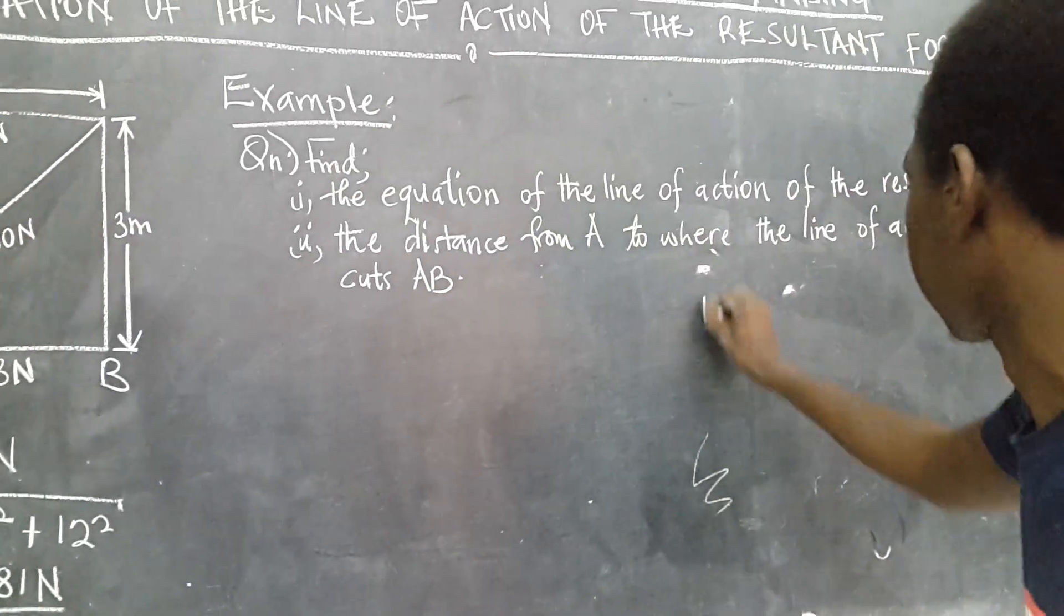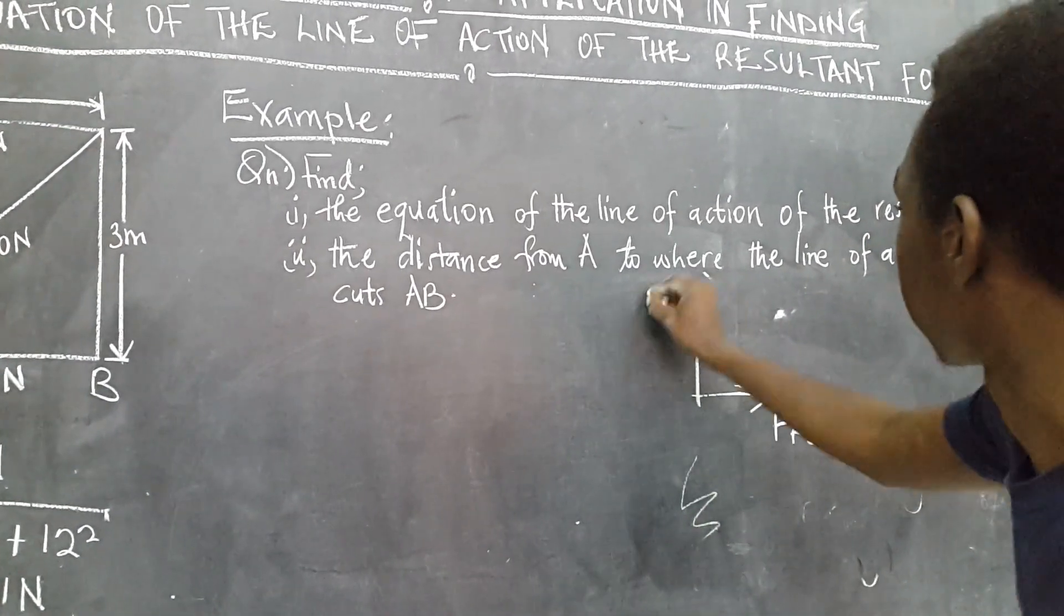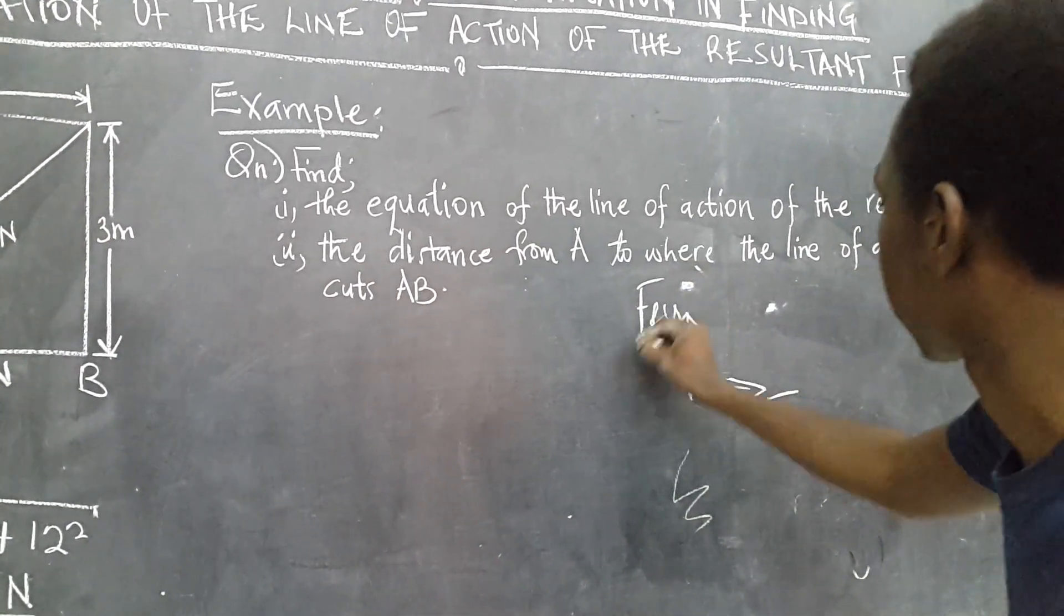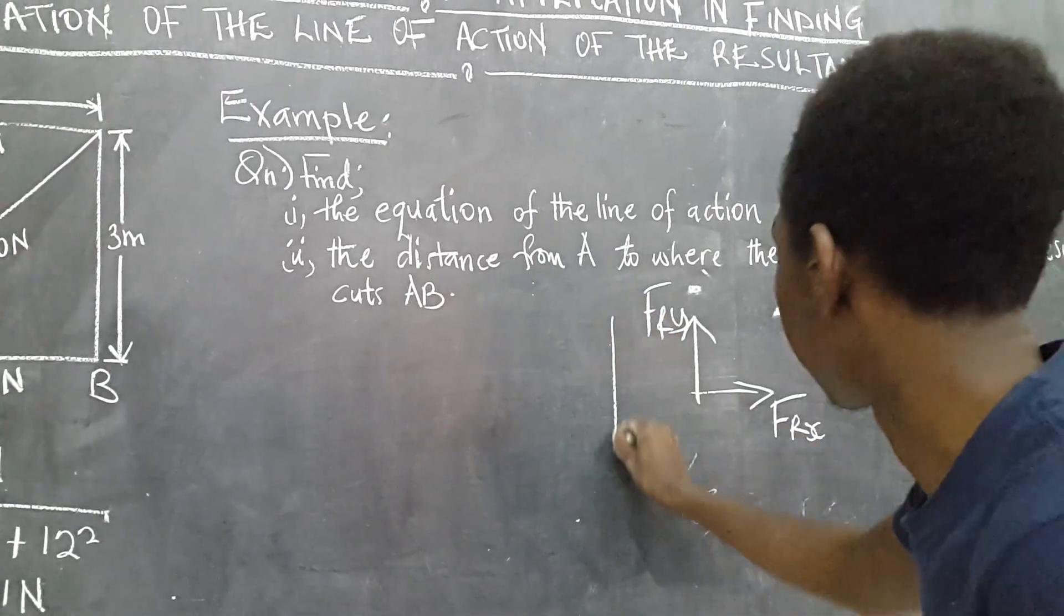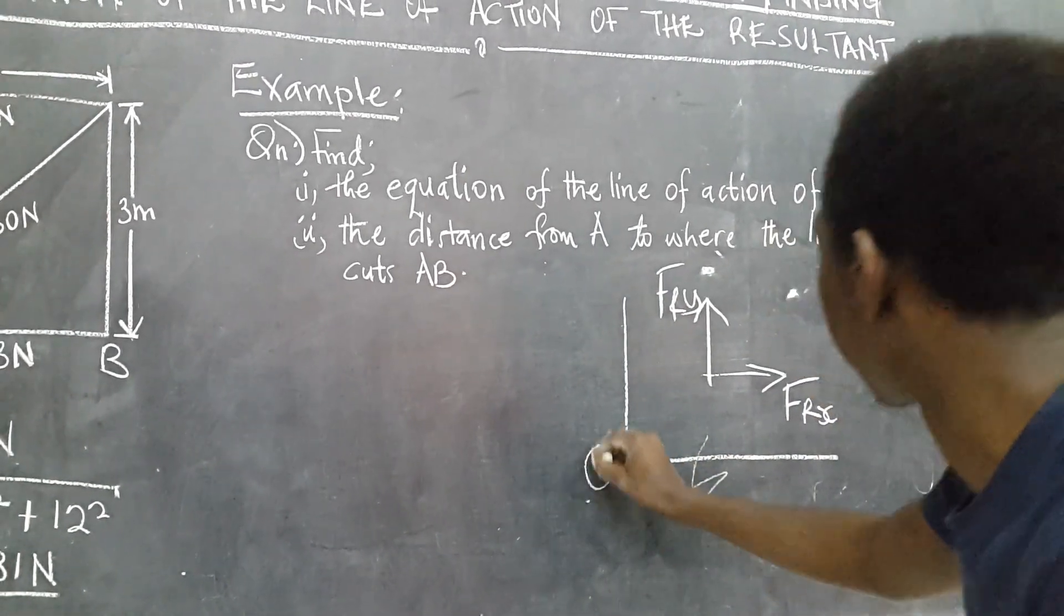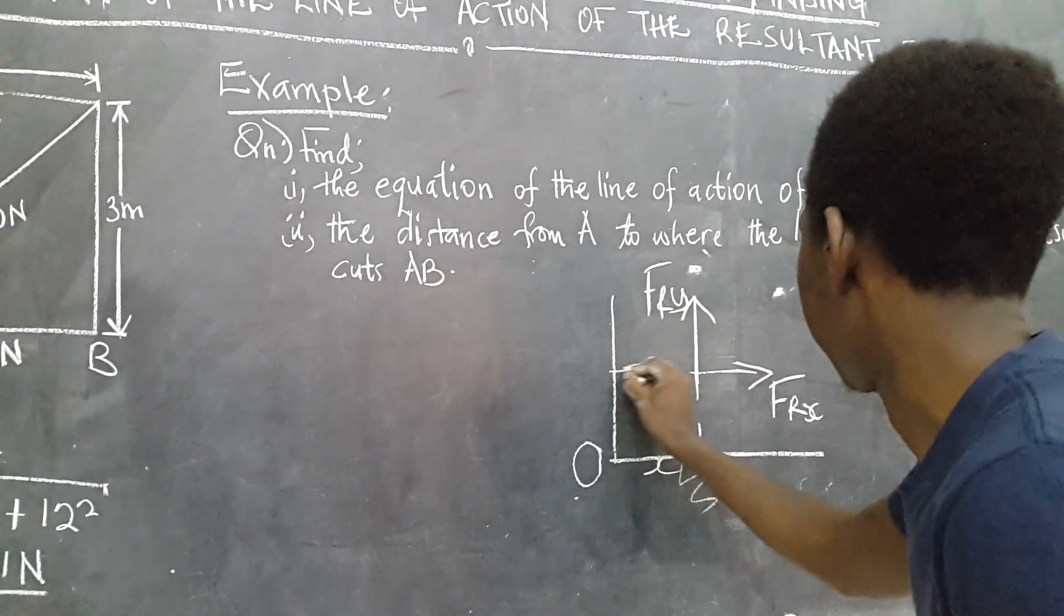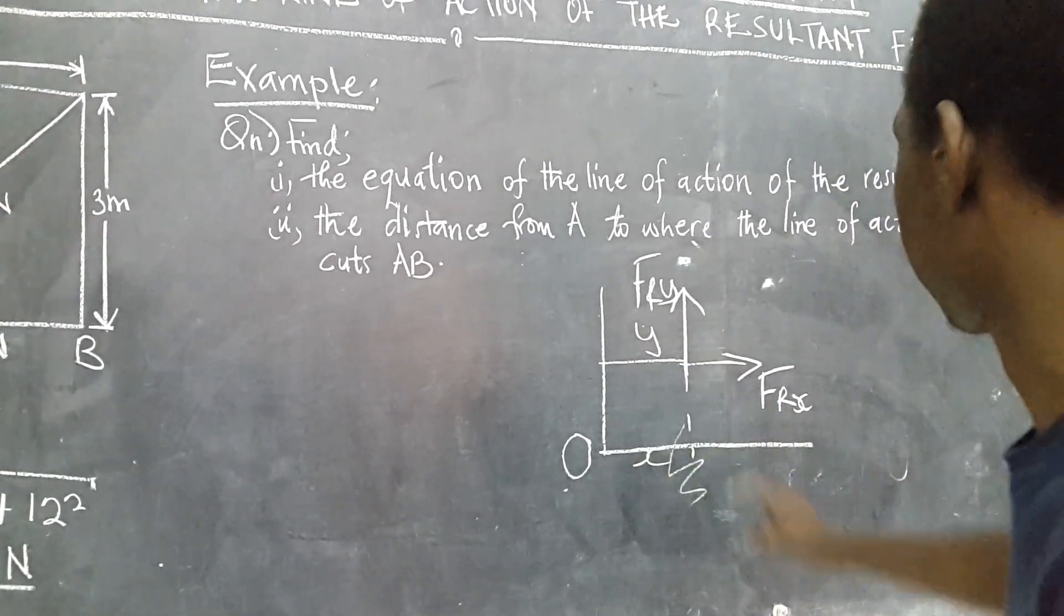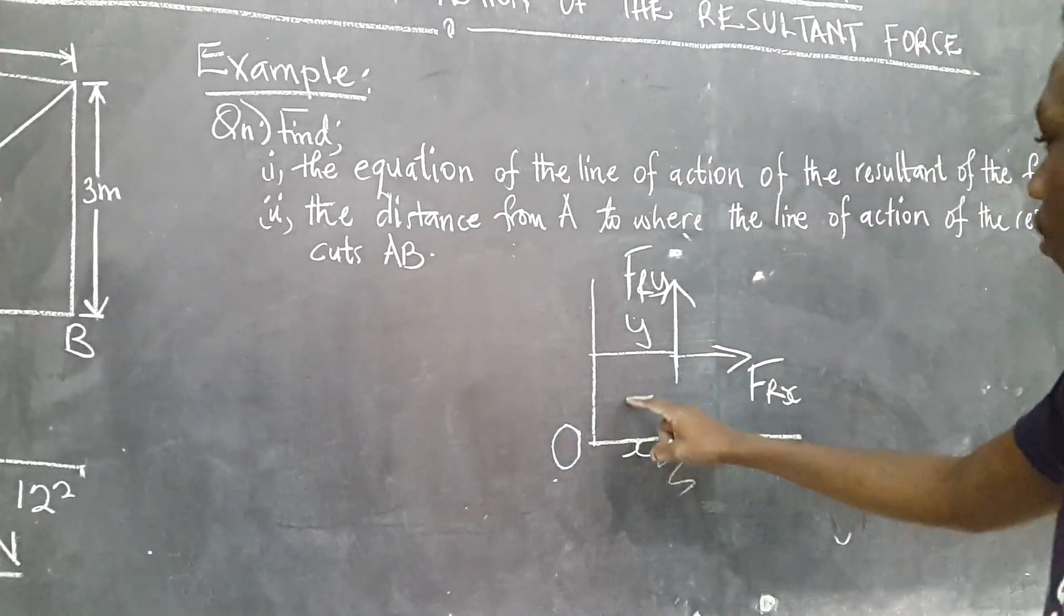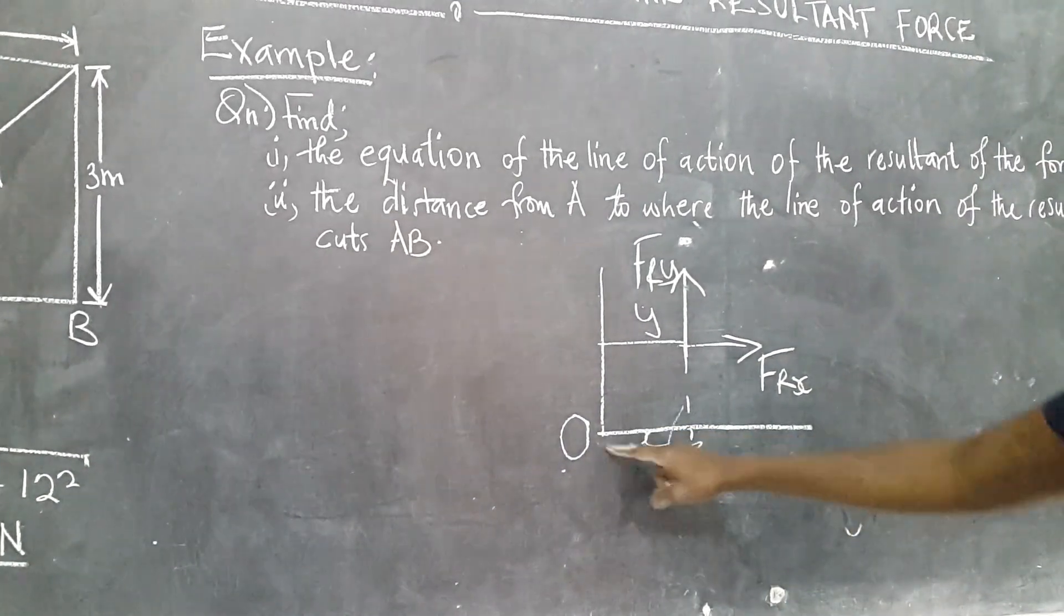So, if you are given resultant force FRX and FRY, if the perpendicular distance of these two from a given point are X for FRY, and Y for FRX,